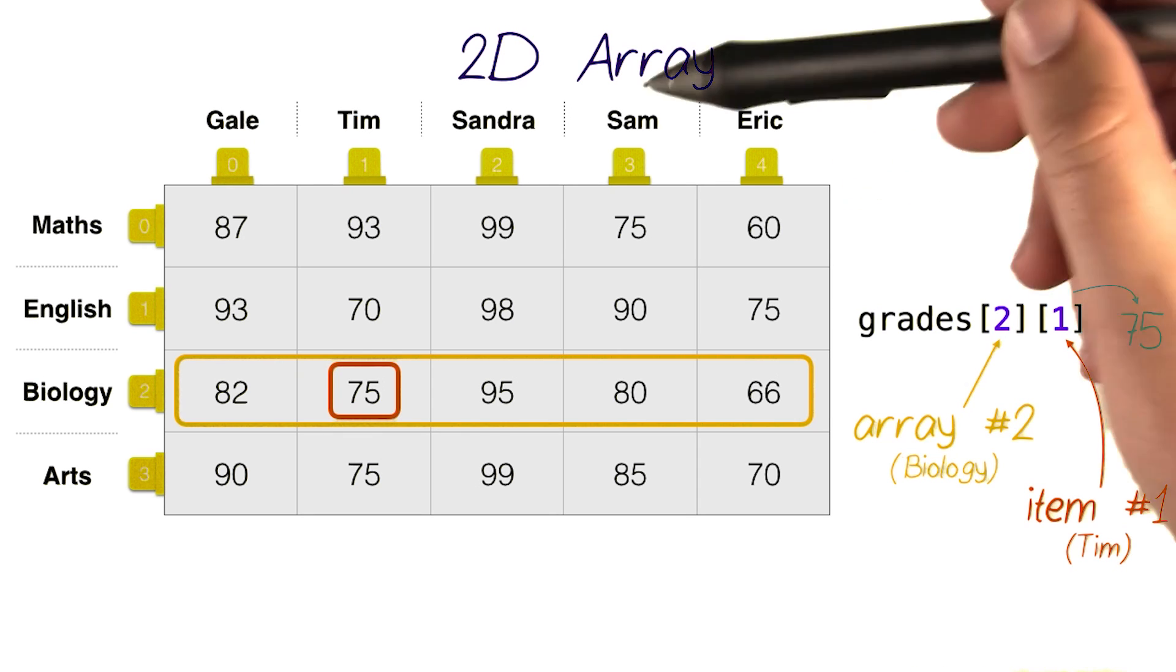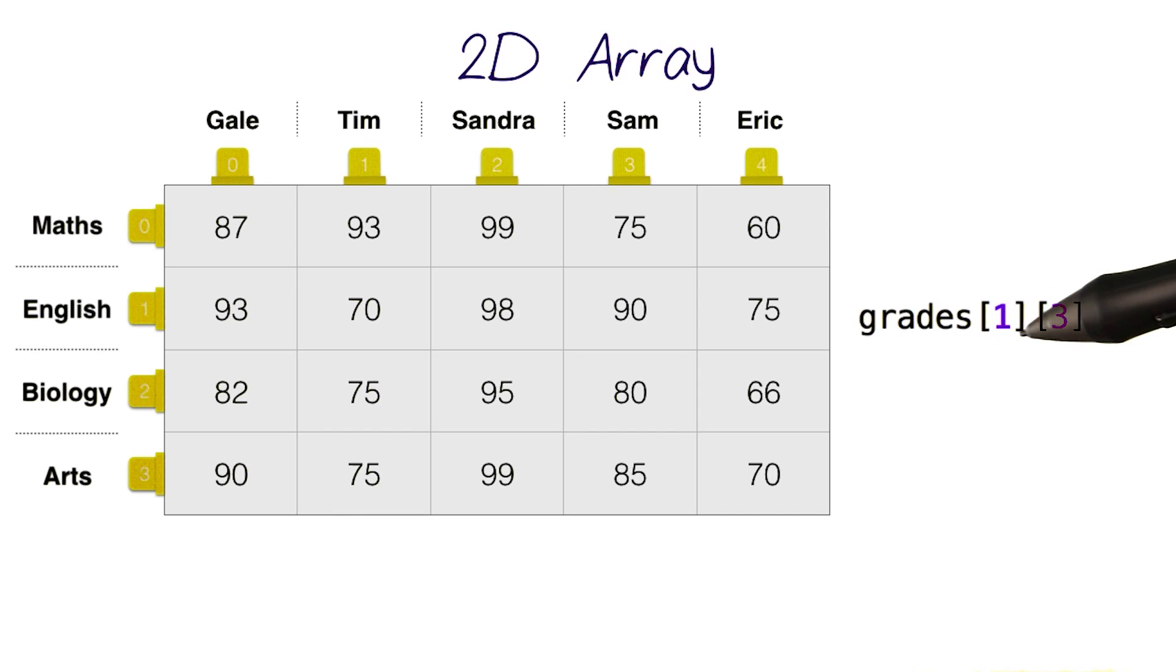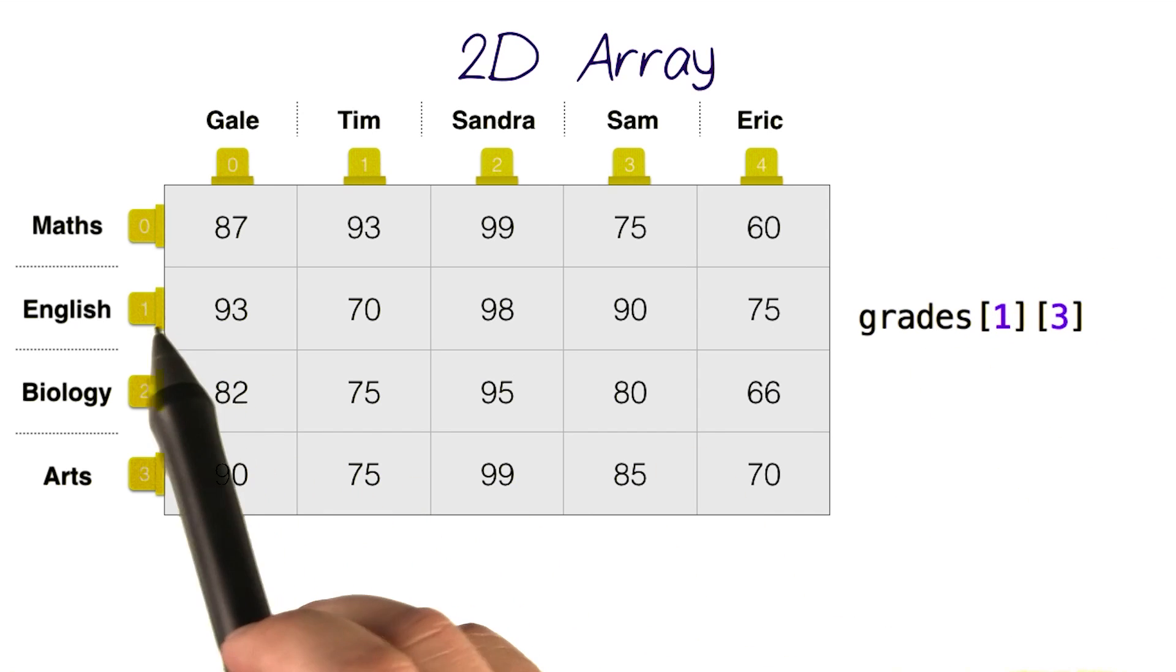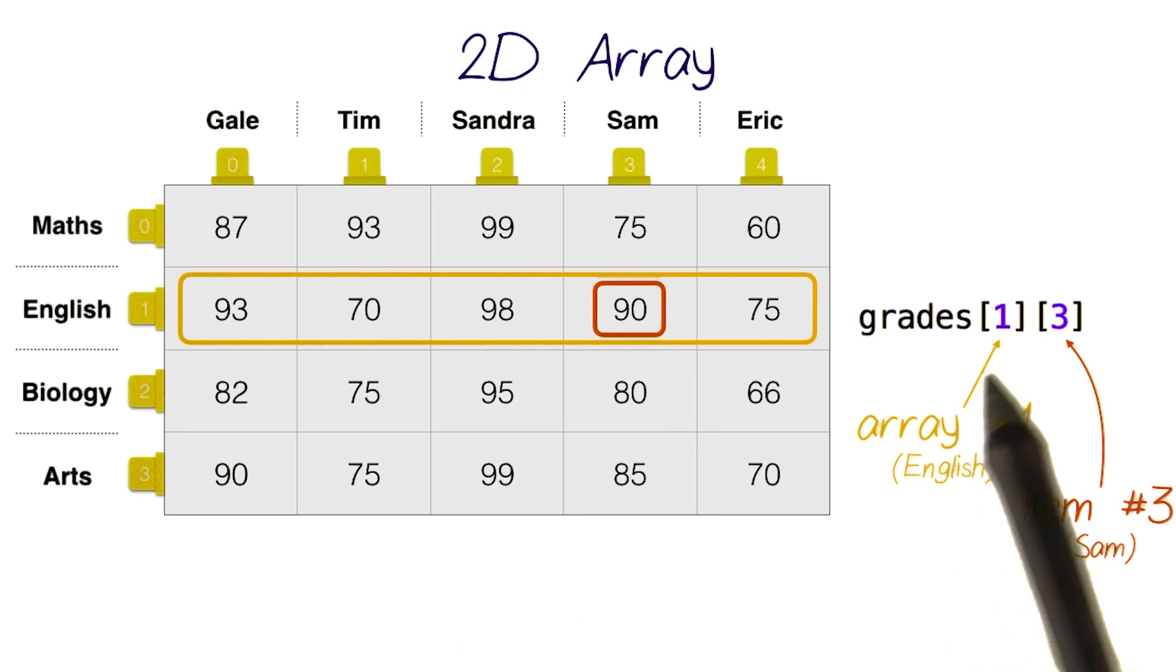Say, for example, we wanted to know Sam's grade in English. That would be stored in grades of 1 and 3, because English has an index of 1, and Sam has an index of 3. So, we always start with the index of the array itself, and then the second set of square brackets has the index of the item inside that array.